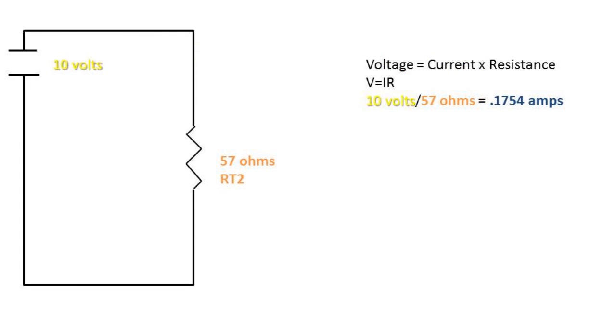Recall that voltage equals current times resistance, or in other words, V equals IR. If we take our 10 volts and divide it by the total resistance of the circuit, we get a current total. In this case, the current total is 0.1754 amps.